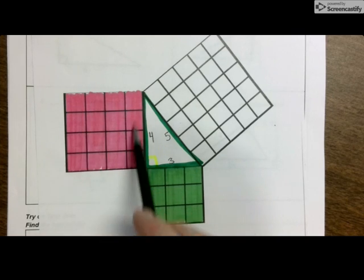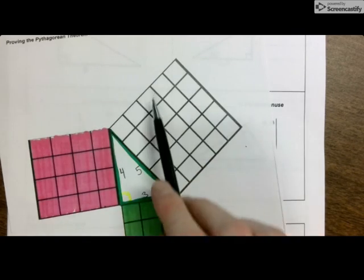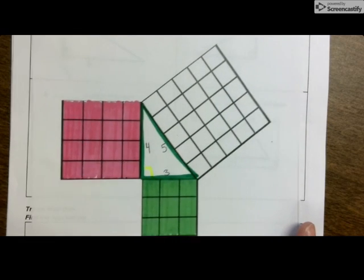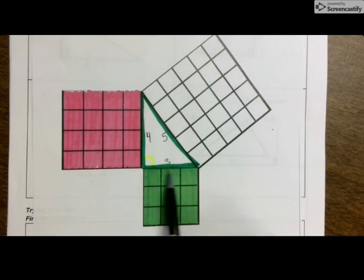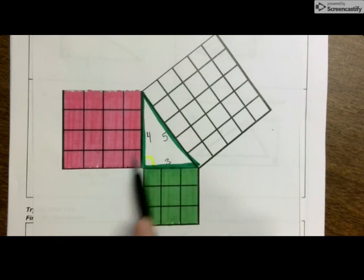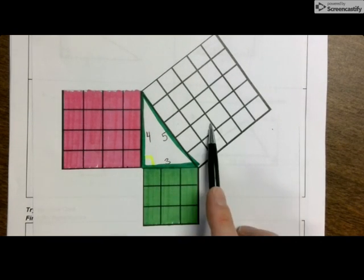So this is a four by four, a three by three, and a five by five. So here is what I'm going to prove to you. This and this equal this.